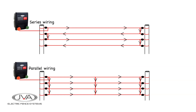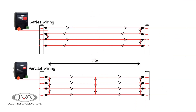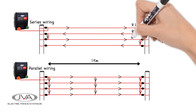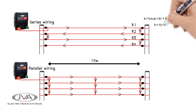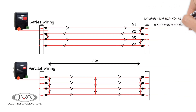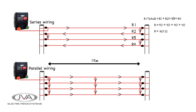To calculate the resistance on a 1 km 4-strand series wired fence, the resistance on each wire is added together to get the total. Knowing the resistance of the galvanized steel wire is 40 ohms, the sum of these strands added together will give us a resistance of 160 ohms.